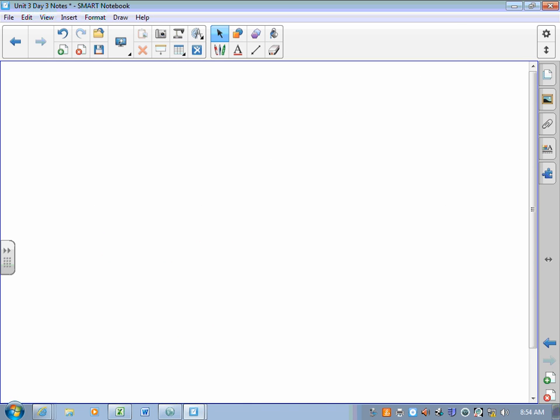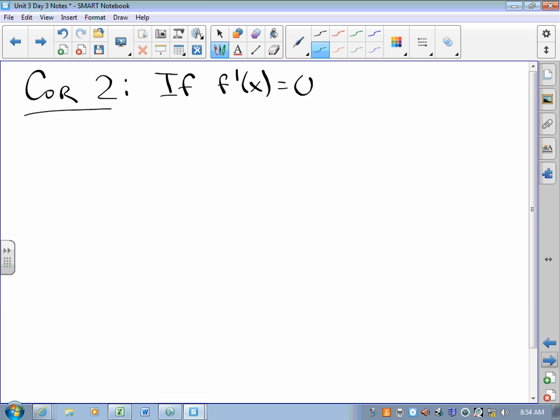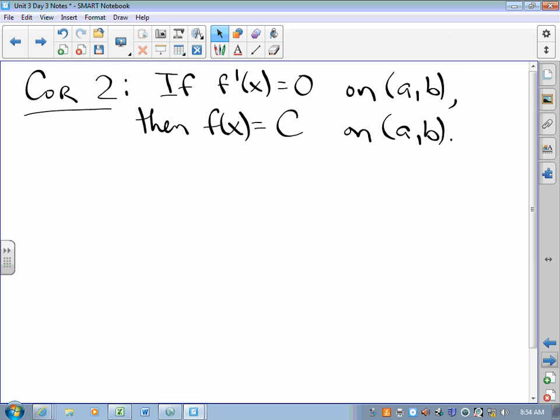Corollary 2. If F prime is zero on some interval a, b, then F of X is a constant on the interval a, b.